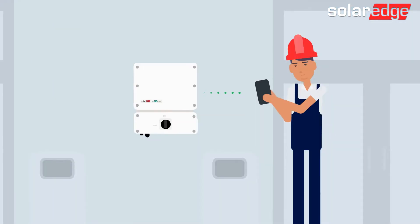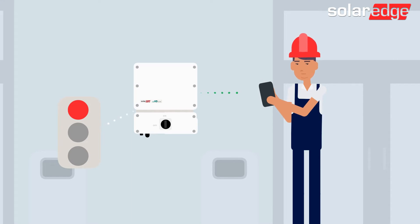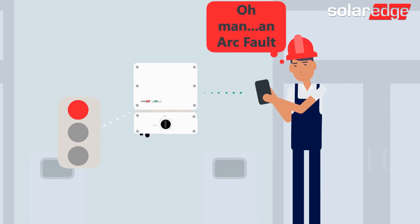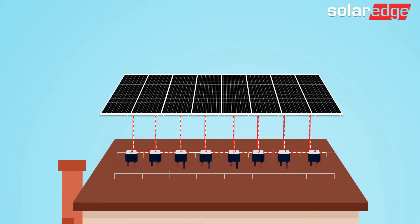The inverter will then display a red LED light, an error code will appear in setup, and system production will stop.